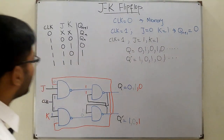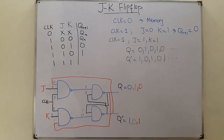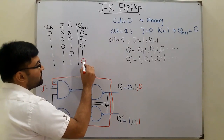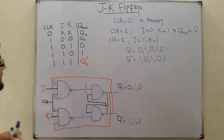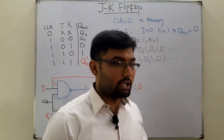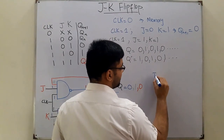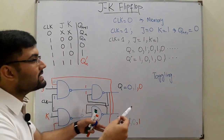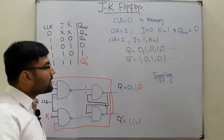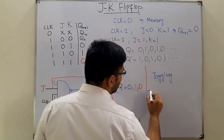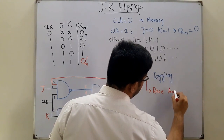This uncontrolled complementing — where Q goes zero, one, zero, one — can be replaced by Q-n-complement. When it changes from the previous state to the next state, this is called toggling. This uncontrolled continuous change of zero-one-zero-one is called the race-around condition, which we will study in the next video.